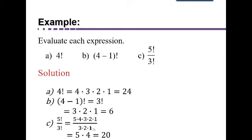You can multiply those out and use your calculator, but you can also use the fact that 3 divided by 3 is 1, 2 divided by 2 is 1, and 1 divided by 1 is 1. So really, all you have to multiply is 5 times 4, which equals 20.